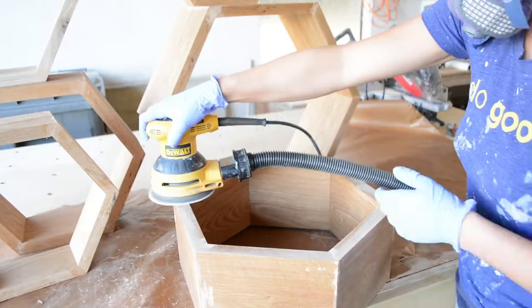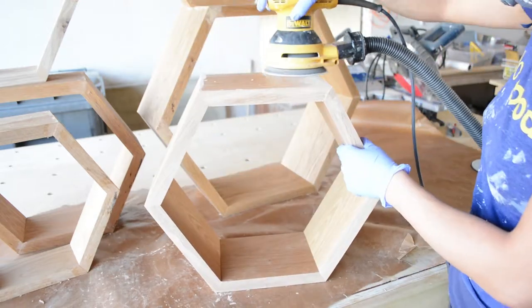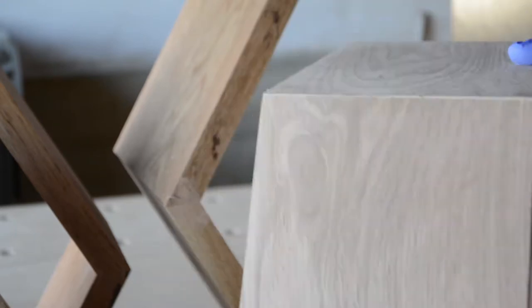I begin sanding the outer faces with 80 grit sandpaper, making sure to get rid of the excess wood filler while preserving the edges. A quick check on my progress and you can already see that the gaps are hardly noticeable.